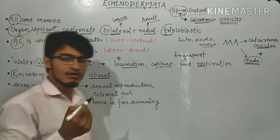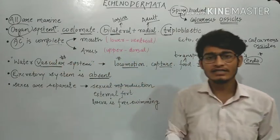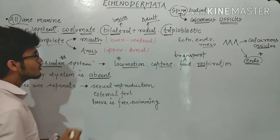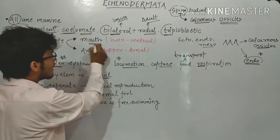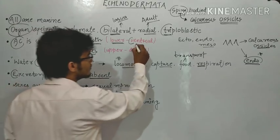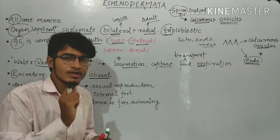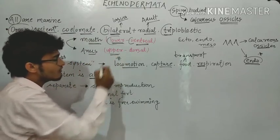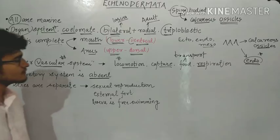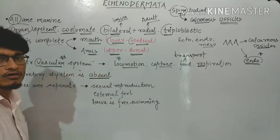The alimentary canal is complete. As they have organ system level of organization, the alimentary canal is going to be complete, meaning there are two separate openings — the mouth and the anus. In the case of echinoderms, the mouth is present on the lower side and is ventral in position. The anus, on the other hand, is present on the upper side and is dorsal. So the anus is on the upper dorsal side, while the mouth is on the lower ventral side of the body of echinoderms.